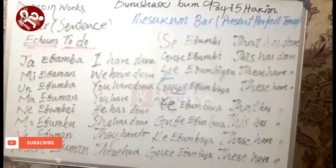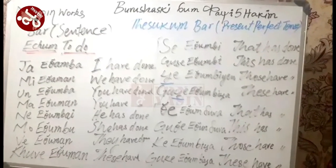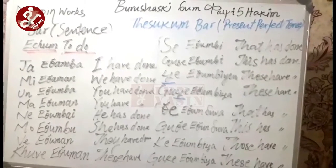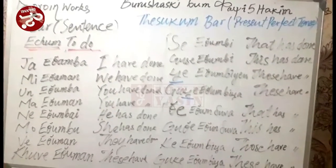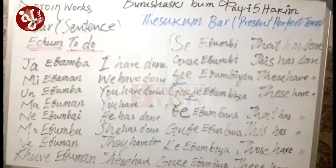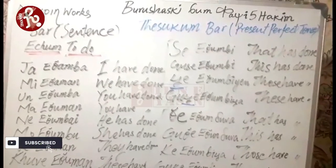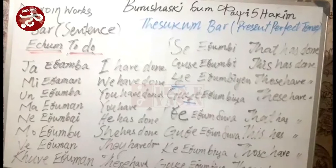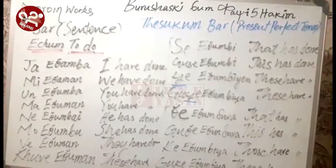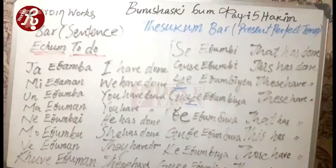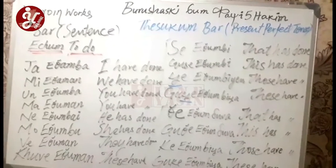Welcome everybody. We are back again — this is Chapter 6, Lesson 5. It is about 'thesuk.' Thesuk means something that has just happened, not in the distant past but very recently. That is called thesuk, and thesukumbar means the tense for news or events that have just happened in the recent present — what you can call the present perfect tense in English.